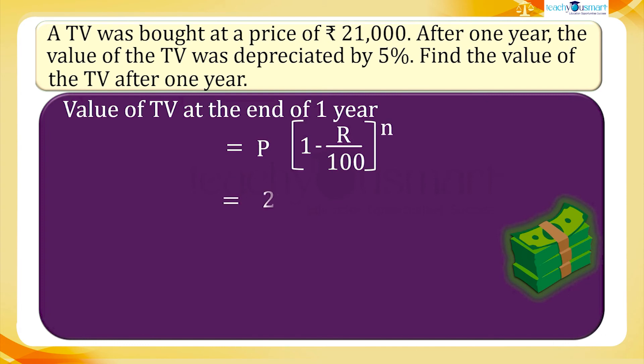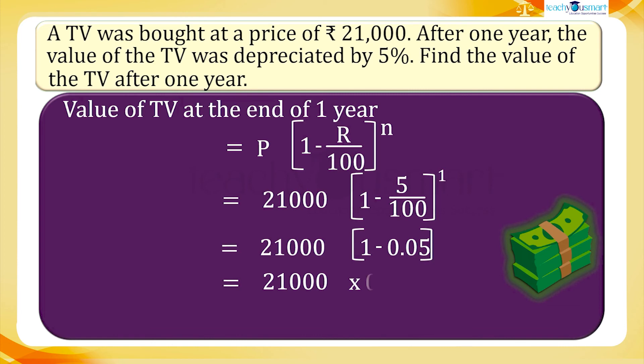Equals 21,000 rupees multiplied by 1 minus 5 divided by 100, the whole raised to 1, equals 21,000 rupees multiplied by 1 minus 0.05, equals 21,000 rupees multiplied by 0.95, equals 19,950 rupees.